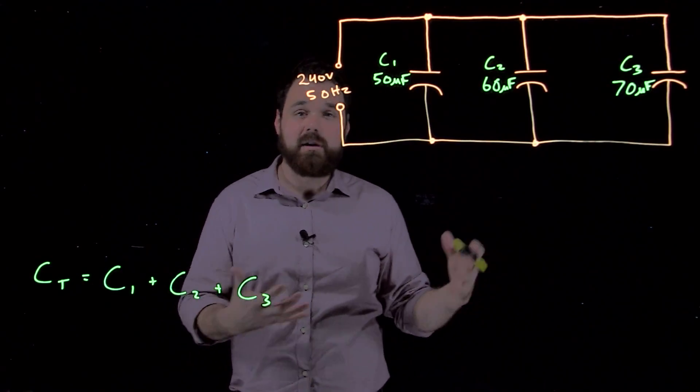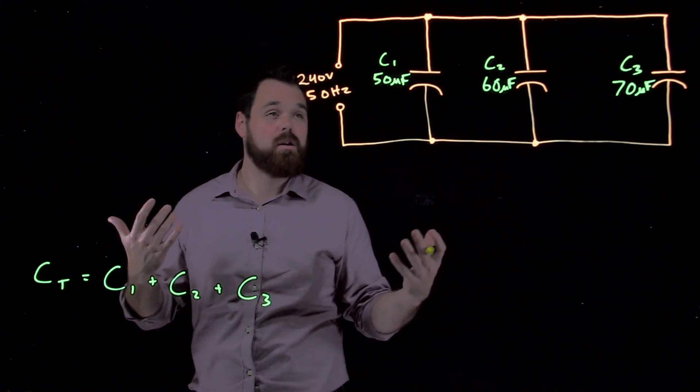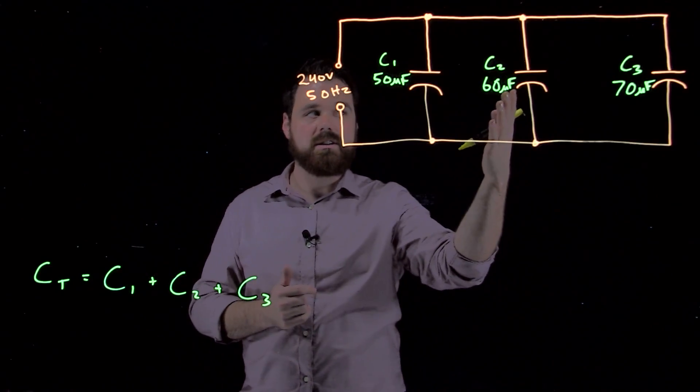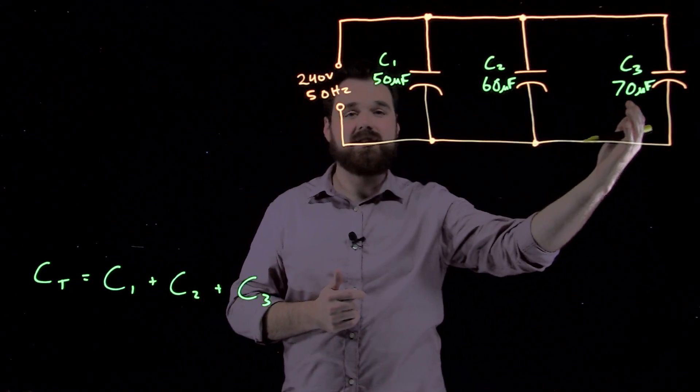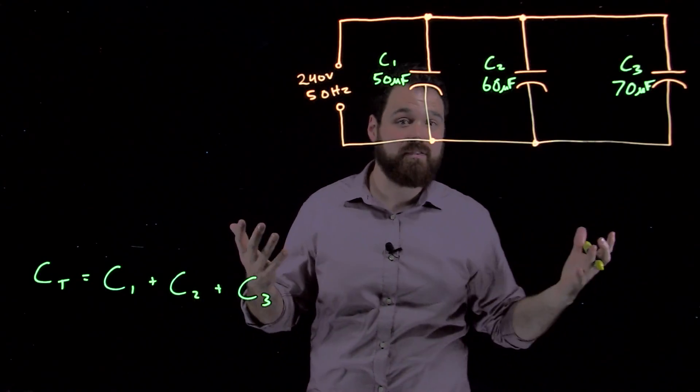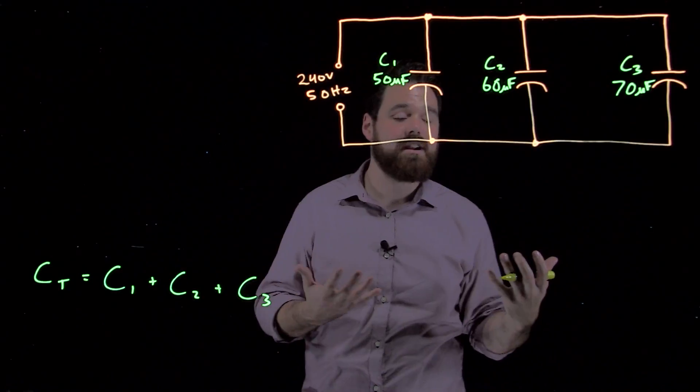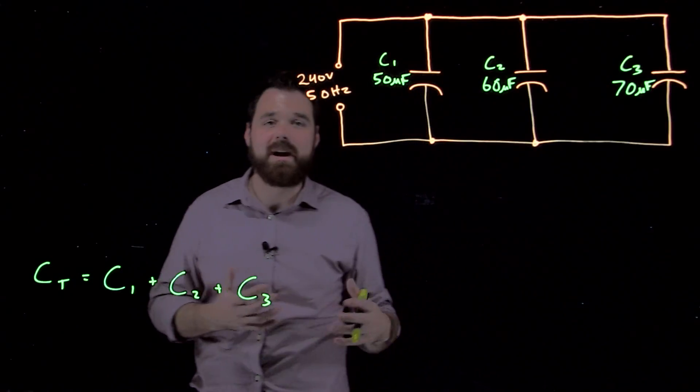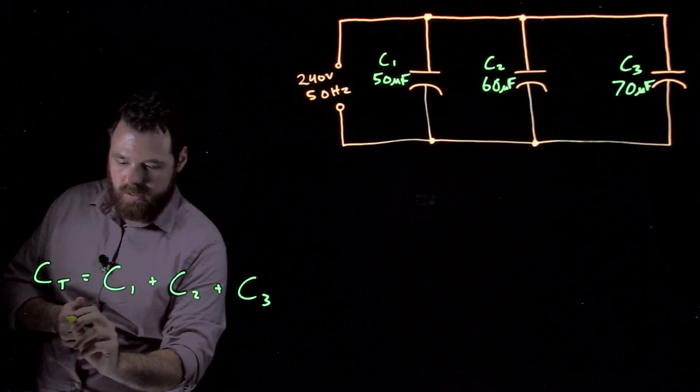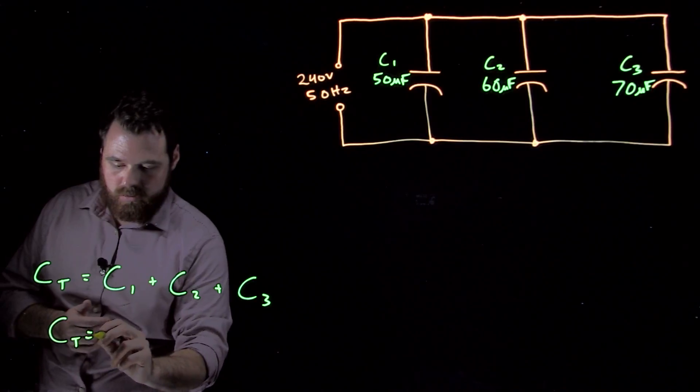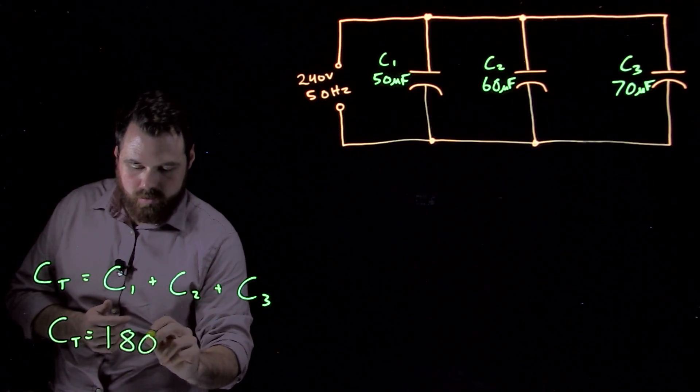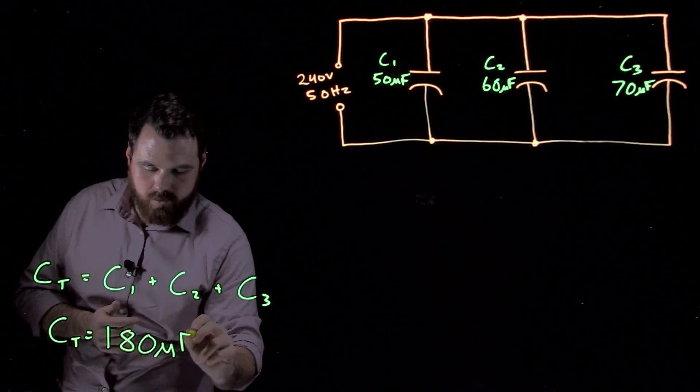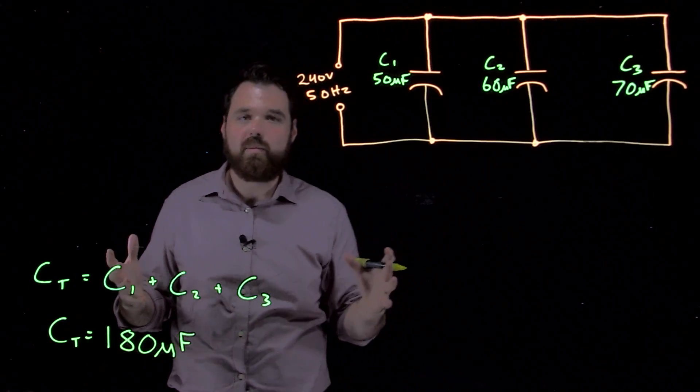In this case here, in this question, we can take our capacitance 50 microfarads plus 60 microfarads plus 70 microfarads. Leave them all in microfarads and that's going to give us an answer also in those microfarads. So what we see here is CT equals 180 microfarads. Perfect.